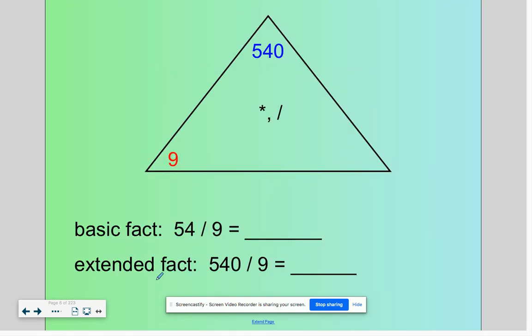Today we're going to explore how basic facts can be used to solve extended facts. If we know what 54 divided by nine is, we can figure out how 540 divided by nine is related.